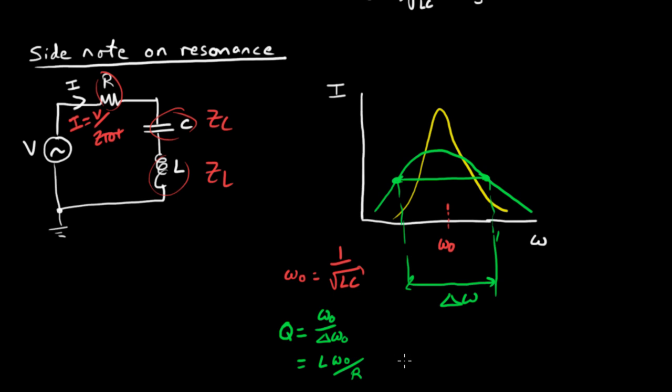and we have 1 over R times square root of L over C. You can work through the algebra and convince yourself that's the case. But for a given L and a given C, the R is going to determine the quality factor, the spread, that full width half max.